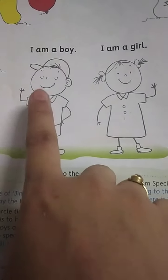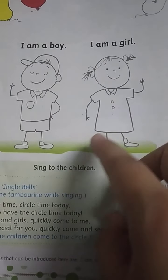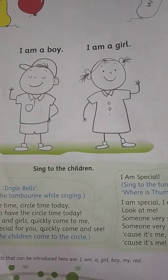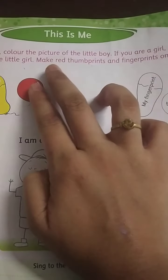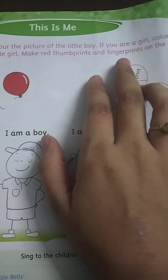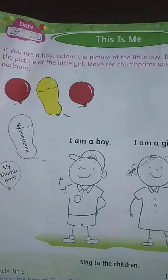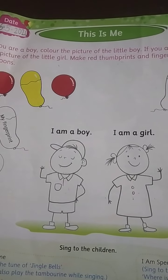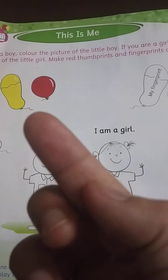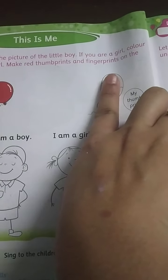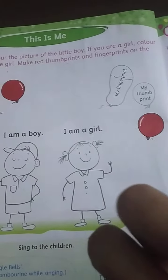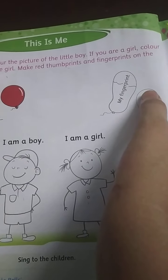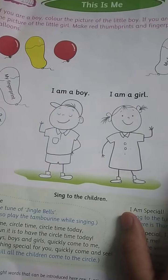If you are a boy, color this one; if you are a girl, color this one. You cannot color both — you will color just one. For the next part: make red thumbprints and fingerprints on the balloons. For this you need red color — red poster color or any other color. Apply it on your finger and make a fingerprint like this, then apply red color and make your thumbprint like this. If you have color, then do it; if you don't have color, then leave it.